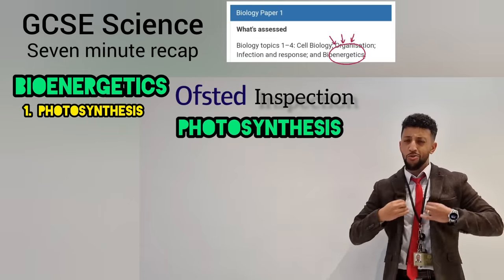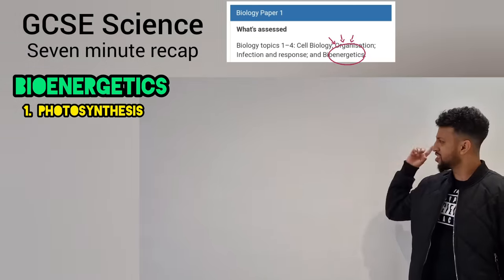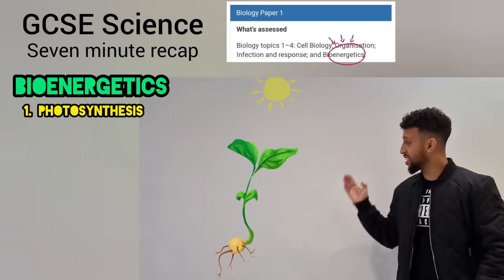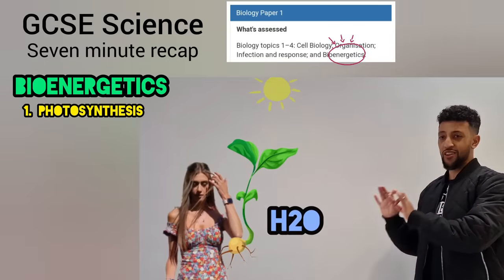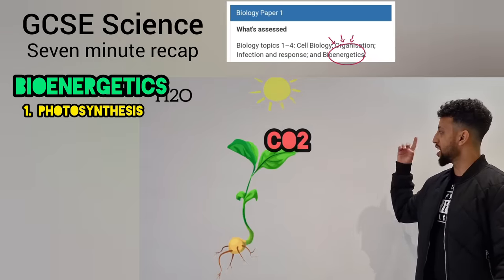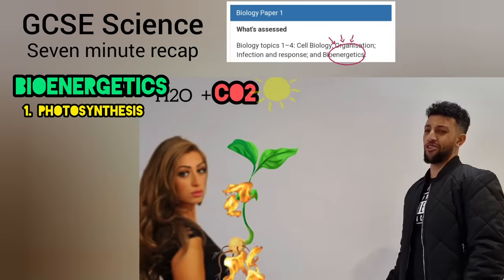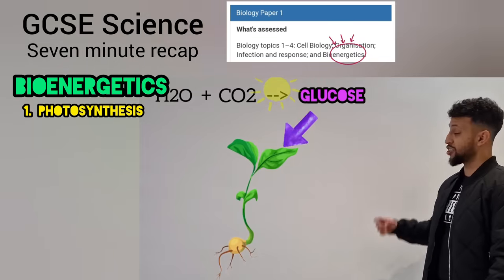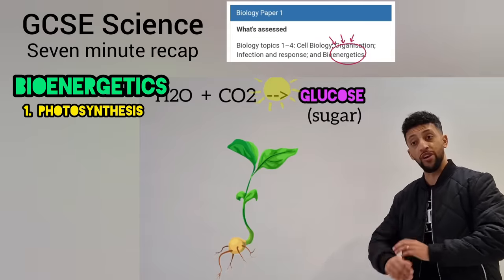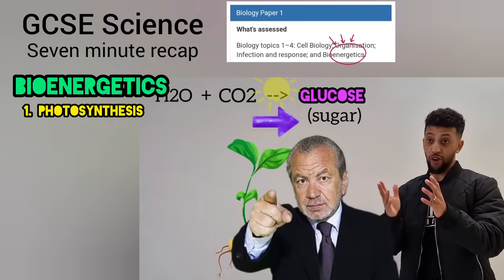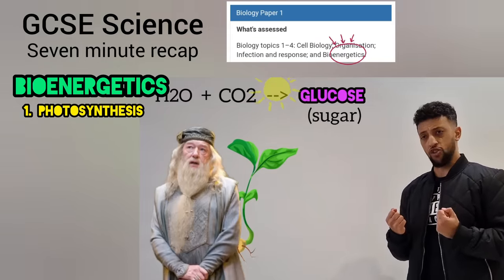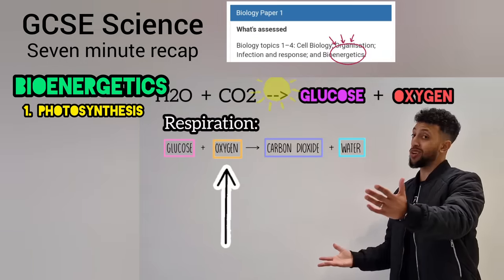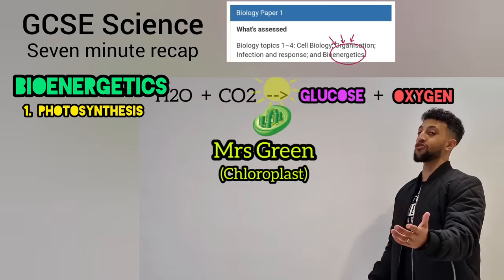I'll teach photosynthesis now. First we need sun — the light goes into the leaf to start this process. What we need next is H2O — it flows in. Carbon dioxide goes in reliably. Glucose is made here — that's sugar. Oxygen leaves in this operation, which gives us oxygen to breathe through respiration.